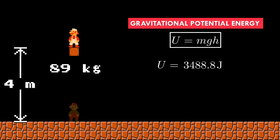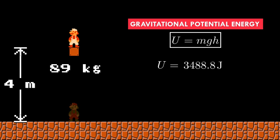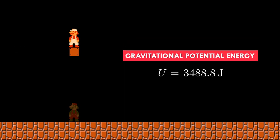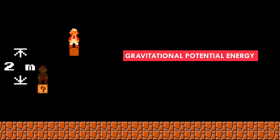So Mario must have 3488.8 joules of energy if he wants to reach the top. We should always remember that this value is measured with respect to the ground, because when we measured the height, we measured from the ground. That doesn't mean we always have to measure from the ground — there might not even be ground in some instances. For example, if we were measuring how much energy Mario needs to go from a lower platform to a higher one, it would make more sense to measure the height from the lower platform.